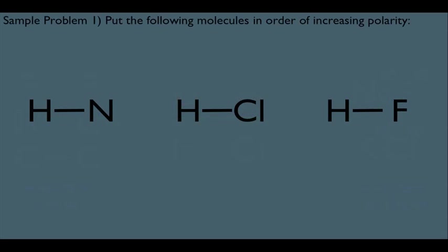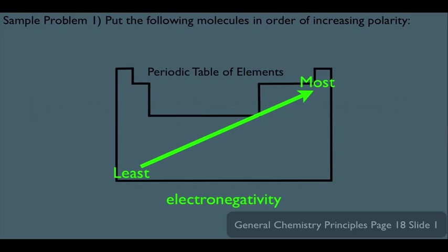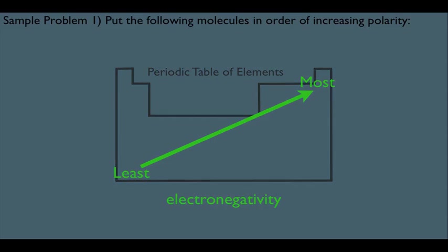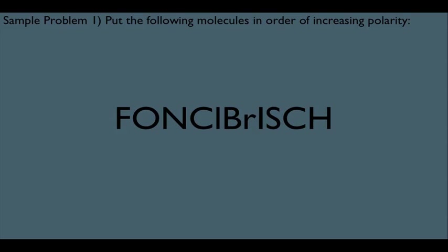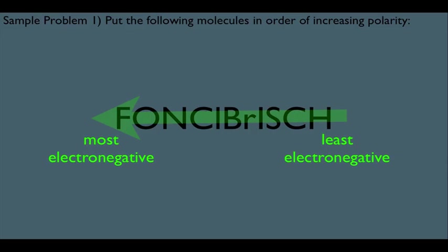Let's look at a sample problem: put the following molecules in order of increasing polarity. We might need to refer to our electronegativity trend, but something that works even better is a mnemonic called Fonkelbrich. If you remember the term Fonkelbrich, it gives you the order of electronegativities, with H being the least electronegative and F being the most electronegative. It includes the elements F, O, N, C, L, B, R, I, S, and C-H.